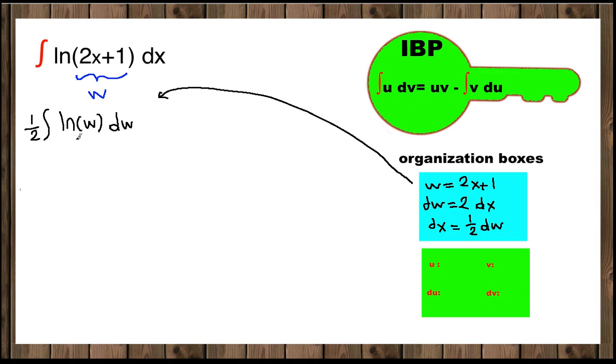Now ln(w) is nice and clean to use integration by parts formula. We're going to use u times v